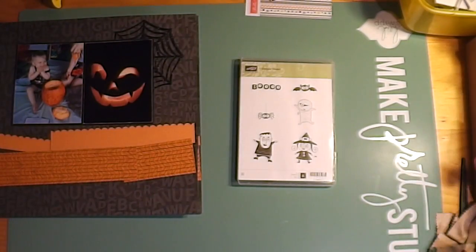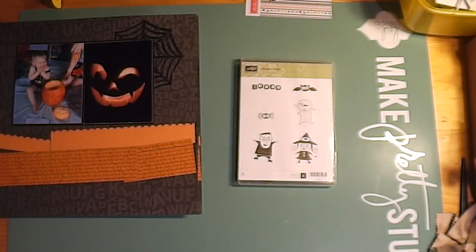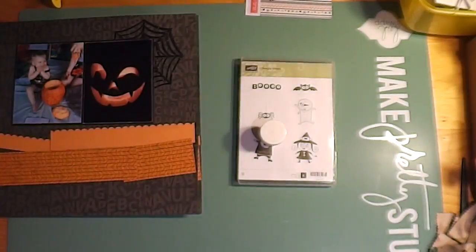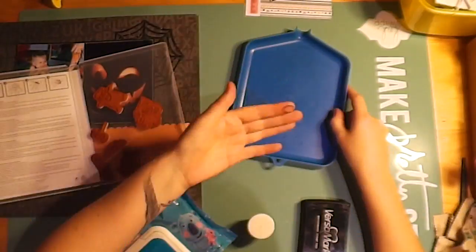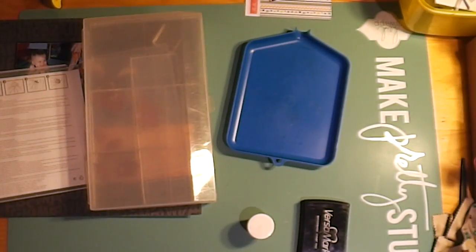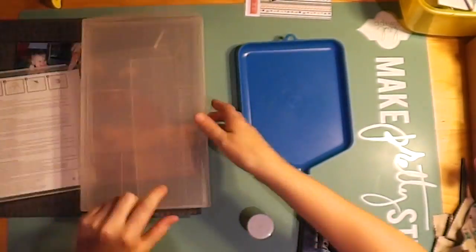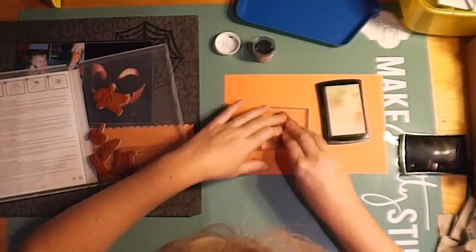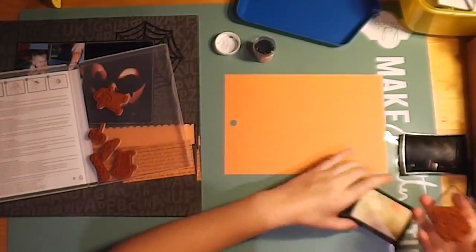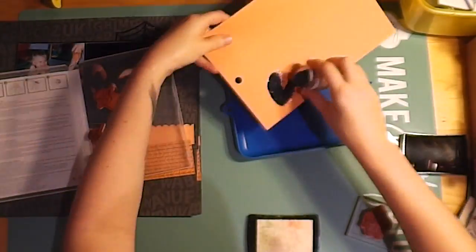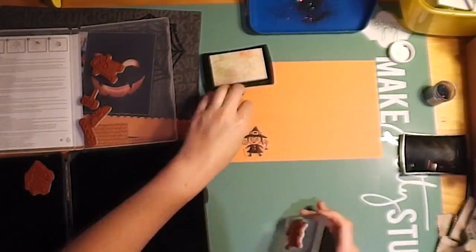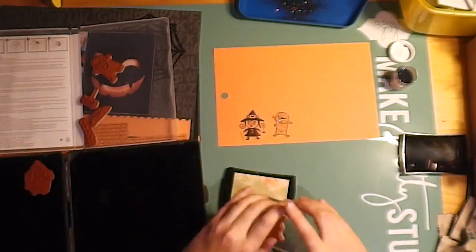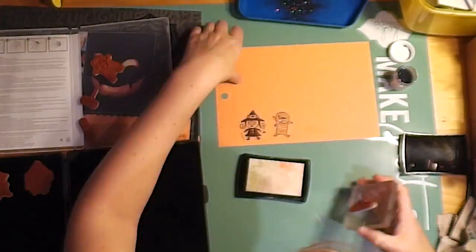So I have this stamp set from Stampin' Up and it's called Googly Ghouls and I have been wanting to use this stamp set for ages. So I decided that this was the day and I was going to use it on this page. So I am using my Versamark ink pad to ink out all of these images and I'm using embossing powder. This is a really old embossing powder so if you guys are interested I don't even know if it's available anymore. It's probably 15 years old.